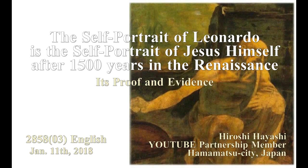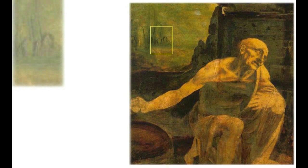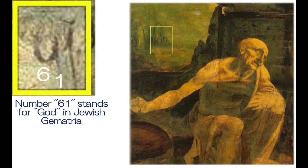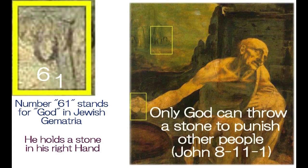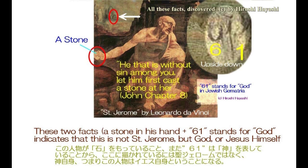Jesus Christ came down after 1500 years in the Renaissance. Today's story is a bit complicated, but the point is that Jesus Christ himself came down onto this earth and left his own self-portraits. All the men shown here are one single God, Jesus Christ. Please have a look at Saint Jerome — the man in Leonardo's painting of Saint Jerome is God or Jesus Christ himself. One reason is that you see number 61 in the background of the painting, and number 61 stands for God in Jewish Gematria.